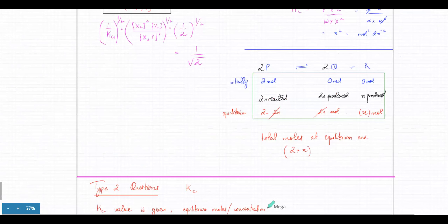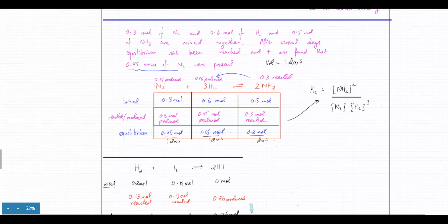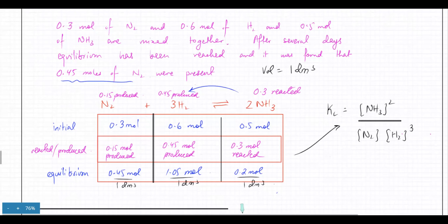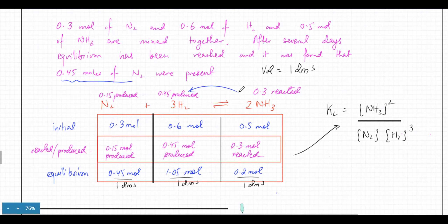Before moving to that, let's go through one of the questions we did earlier. We learned how to make this ICE table. The question states that 0.3 moles of nitrogen, 0.6 moles of hydrogen, and 0.5 moles of NH3 are mixed together as initial moles in a container. After several days at equilibrium, it was found that 0.45 moles of N2 were present.